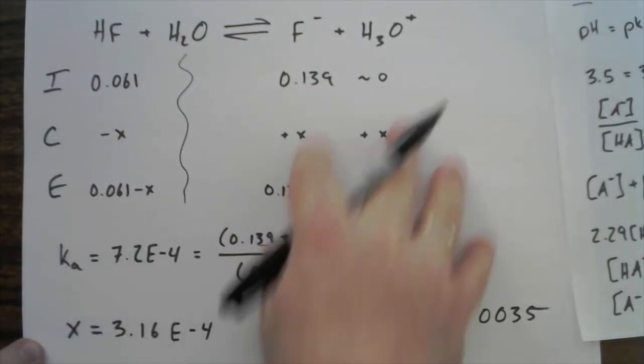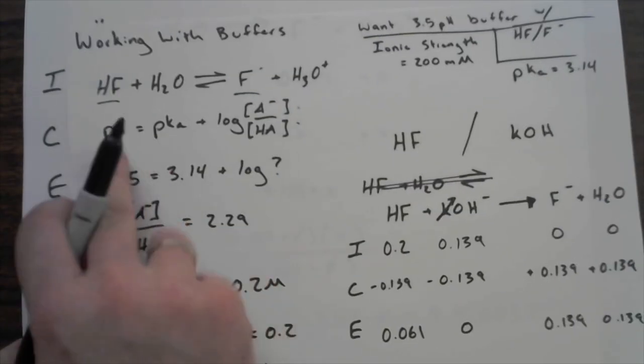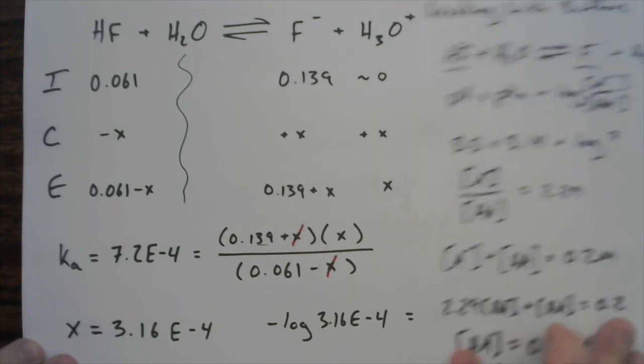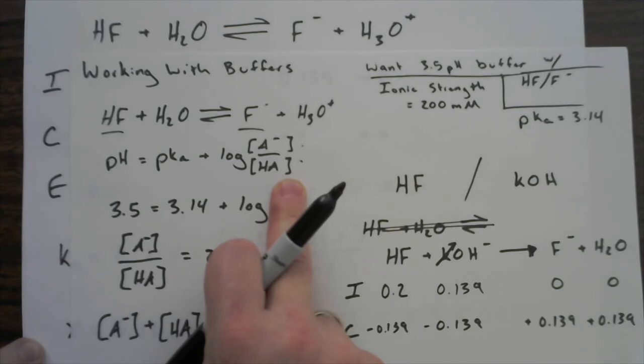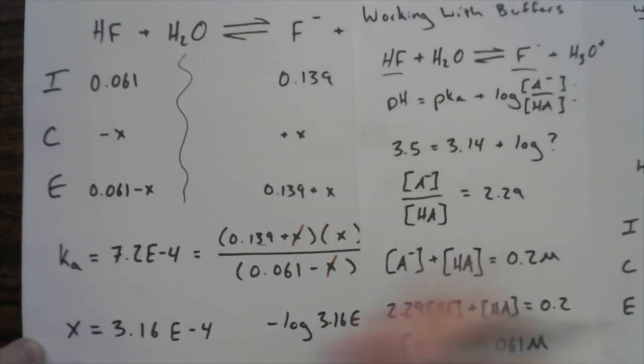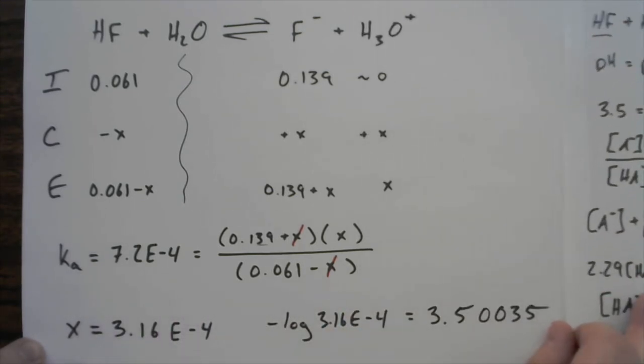...that this method here is highly, highly linked to just jumping in and using the Henderson-Hasselbalch equation. Remember, this Ka expression is actually the Henderson-Hasselbalch equation, as long as you go take the negative log of all your terms and kind of rearrange some things here.